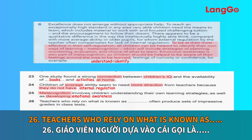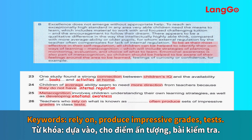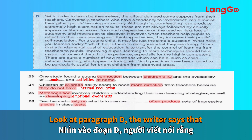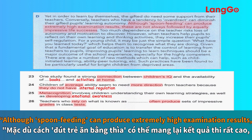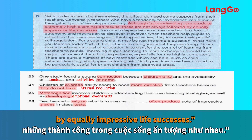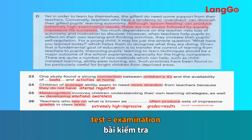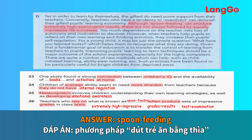Number 26: teachers who rely on what is known as blank often produce sets of impressive grades in class tests. Keywords: rely on, produce impressive grades, and tests. Look at paragraph D. The writer states that although spoon feeding can produce extremely high examination results, these are not always followed by equally impressive life successes. Extremely high and impressive, grades and results, and tests and examinations have the same meaning here. Our answer is spoon feeding.